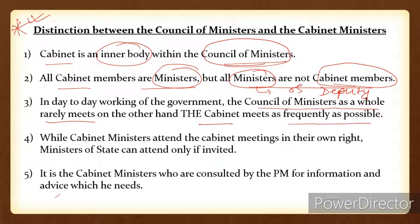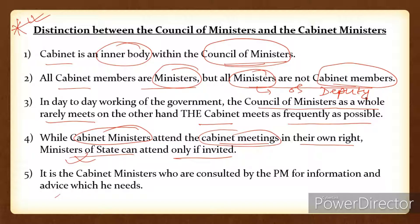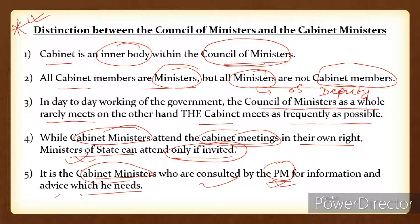On the other hand, the Cabinet meets as frequently as possible. While cabinet ministers attend cabinet meetings in their own right, Ministers of State can only attend if they are invited. It is the cabinet ministers who are consulted by the Prime Minister for information and advice — generally cabinet ministers are consulted, not the entire Council of Ministers.